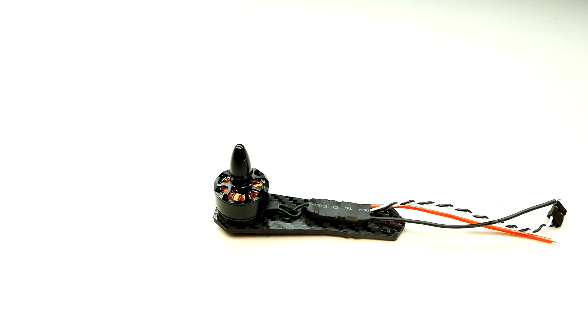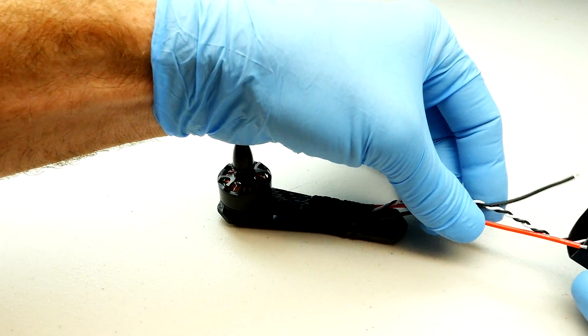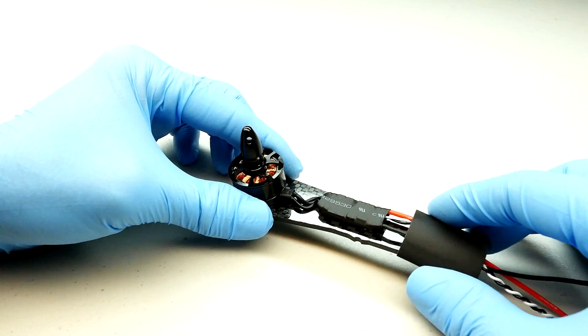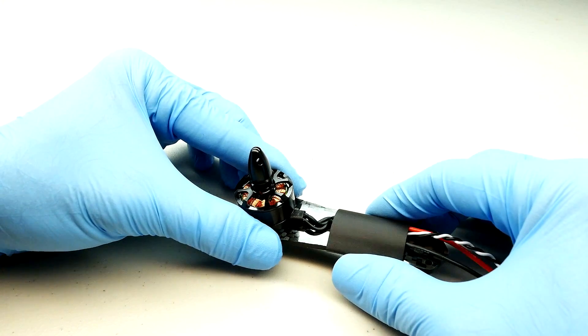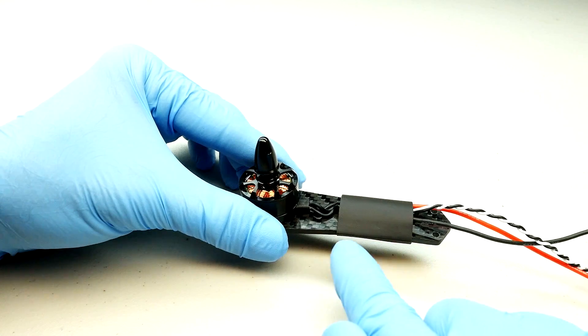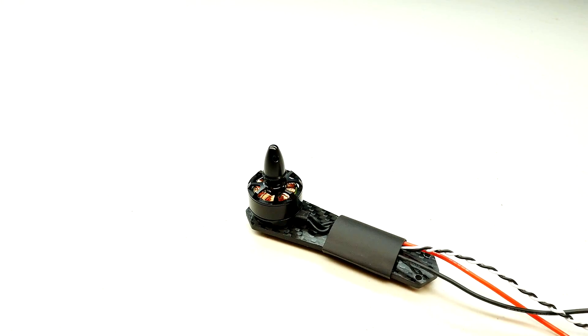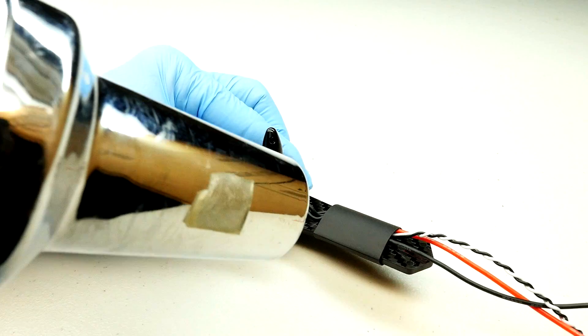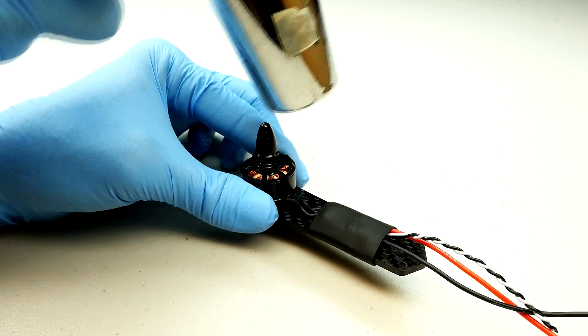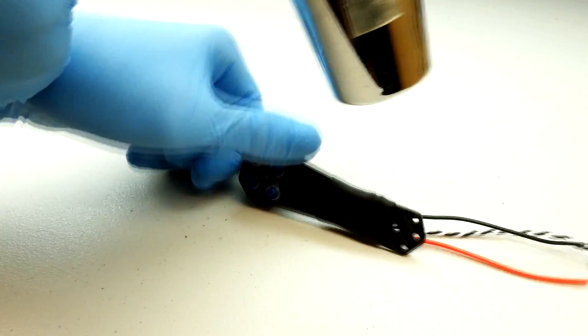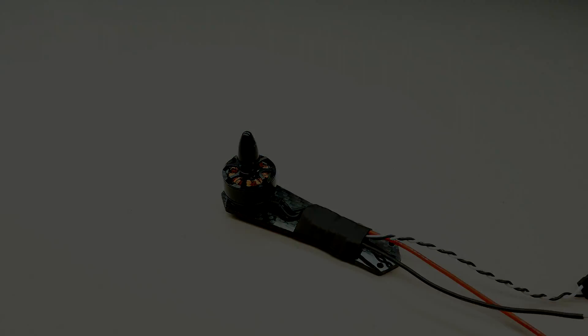All right, the arm is removed from the craft. The next step is to take some more shrink tubing here with a diameter that's large enough to go over the entire arm and the speed controller. Position it in place. Make sure it's centered. I've cut this length to about 32 millimeters. Once it's in place, go ahead and shrink it down.